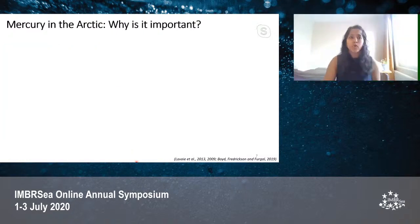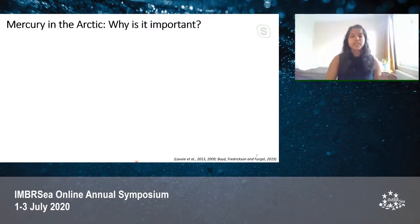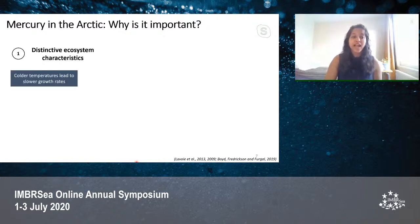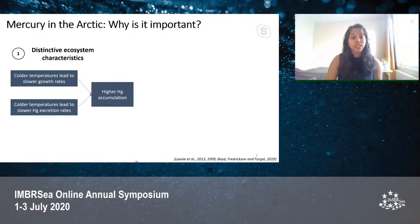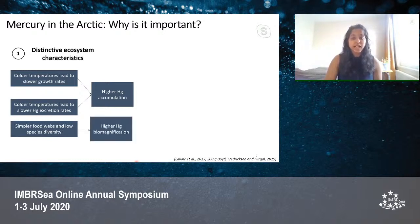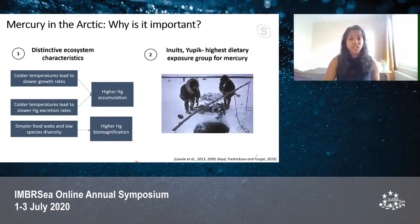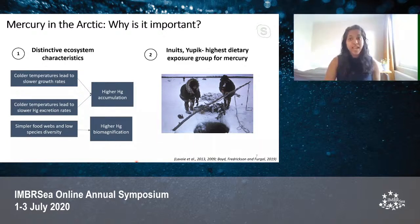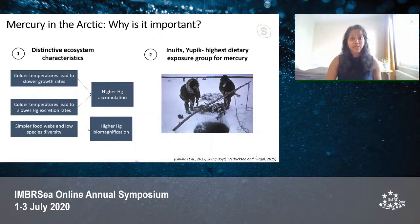There are many reasons why it's important to look at mercury contamination worldwide, but a few extra reasons why it's important in the Arctic. The distinctive ecosystem characteristics — colder temperatures — lead to slower growth rates and slower mercury excretion rates, both leading to higher mercury accumulation. Additionally, simpler food webs and low species diversity lead to higher biomagnification of mercury in Arctic food webs compared to lower latitudes. Arctic indigenous peoples like Inuits and Yupik have always relied on fishing for their nutritional, cultural, and social well-being, making them the highest dietary mercury exposure groups.